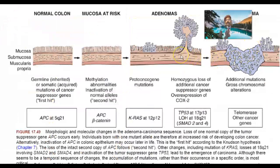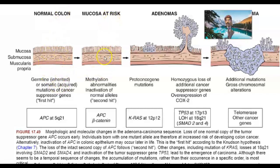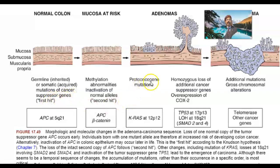This image from Robbins' pathogenesis of disease shows the mucosa, submucosa, and muscularis propria. Starting from normal colon, there is methylation and inactivation of normal alleles — a second hit to APC and beta-catenin. Germline inherited or somatic acquired mutations of tumor suppressor genes are shown, followed by proto-oncogene mutation KRAS at 12p12, then homozygous loss of tumor suppressor genes and overexpression of COX2, additional mutations, gross chromosomal alterations, and finally telomerase and other cancer genes.